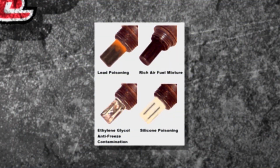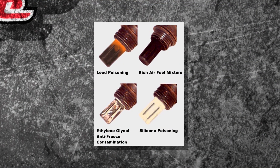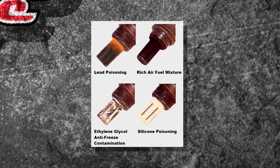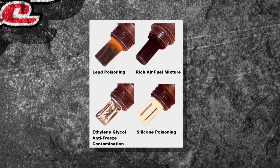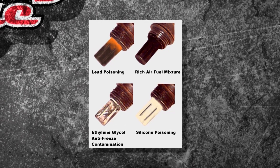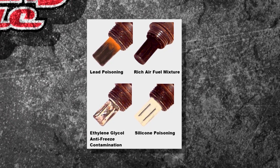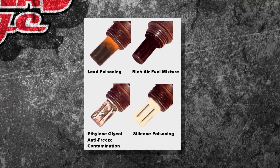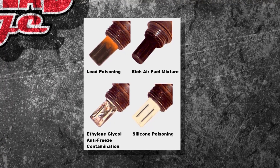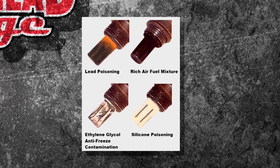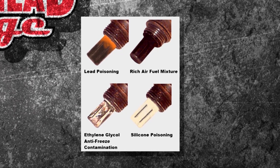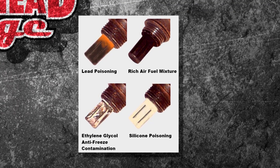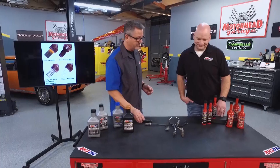There are several problems that can affect your oxygen sensor: lead poisoning from leaded fuel, a rich air-fuel mixture causing black sooty buildup, ethylene glycol or antifreeze contamination, and silicone poisoning if you use the wrong RTV — room temperature vulcanizers. These sensors are heavy hitters when it comes to fuel delivery, so we have to keep them clean.